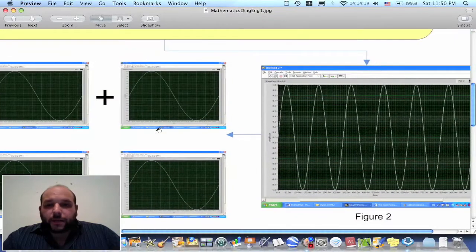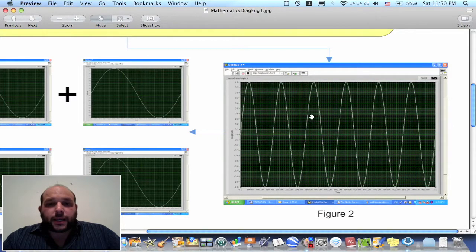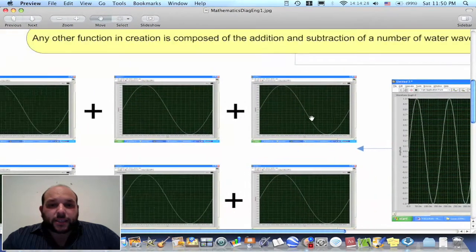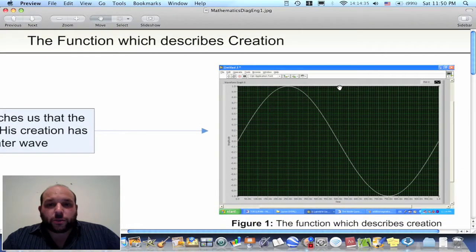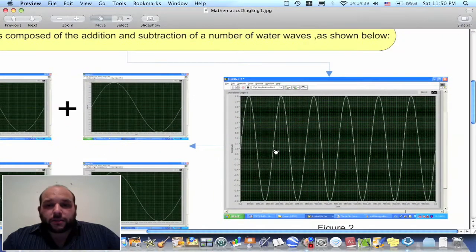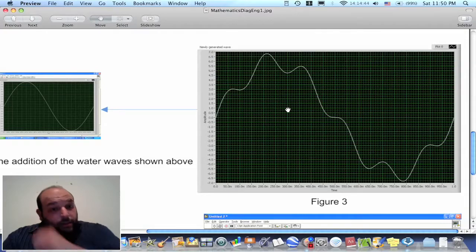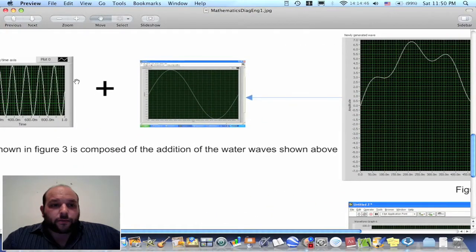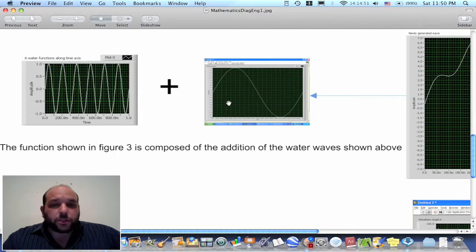So if we look for example at this mathematical signal or mathematical function, this function or this signal is composed of just the addition of these basic signals. So this basic signal we learn from the Quran, which has the shape of water waves. If we add these six kind of units, we will end up with this function. Also, if we have this function, this one is the addition of these basic signals having the shape of water waves.